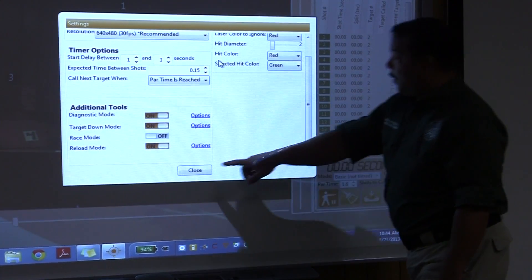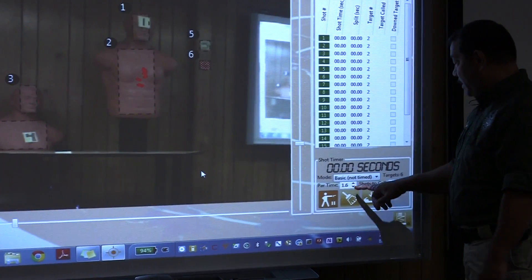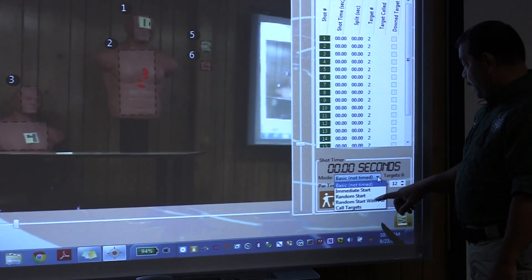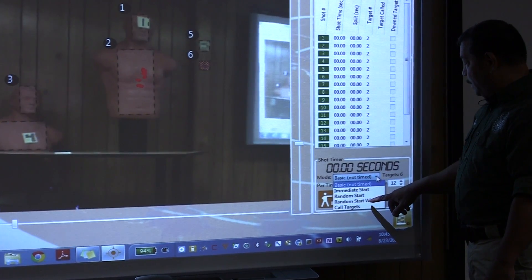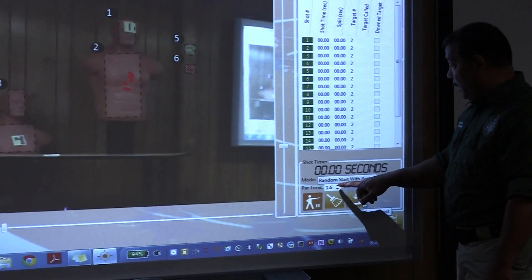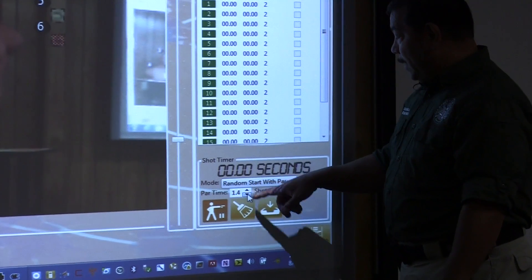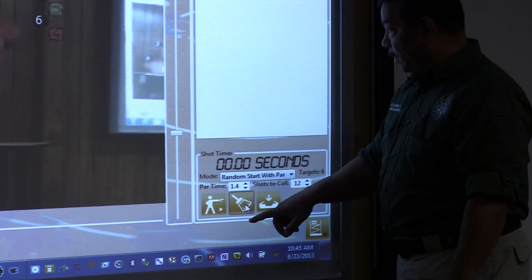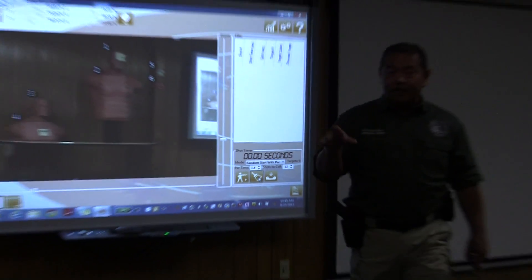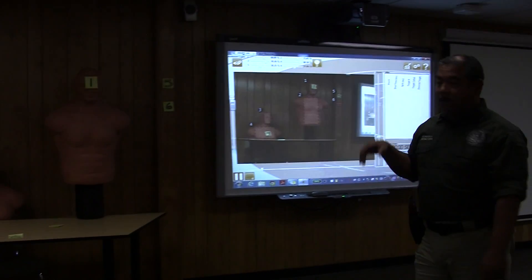So now we're going to add a par-time to it. We'll do a random start with a par-time and we're just going to go through let's say about a second and a half and see what happens. We're just playing here a little bit. So when I hit it, it's going to come up, we're going to put some rounds on, look for the reloads, see what happens.